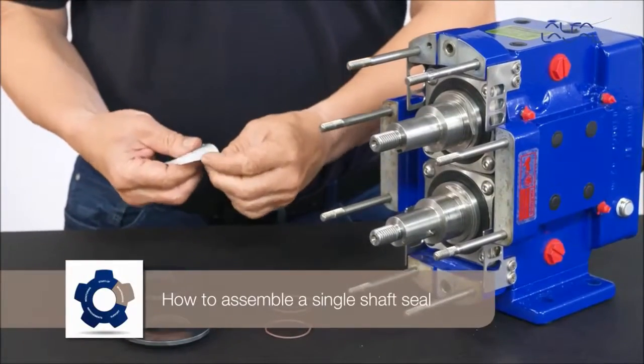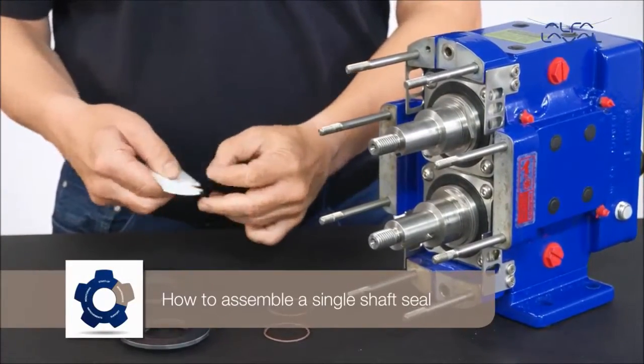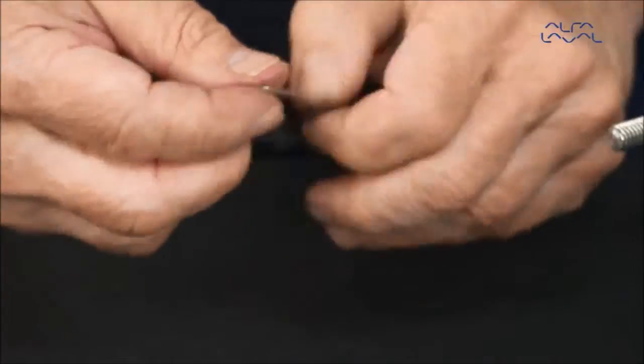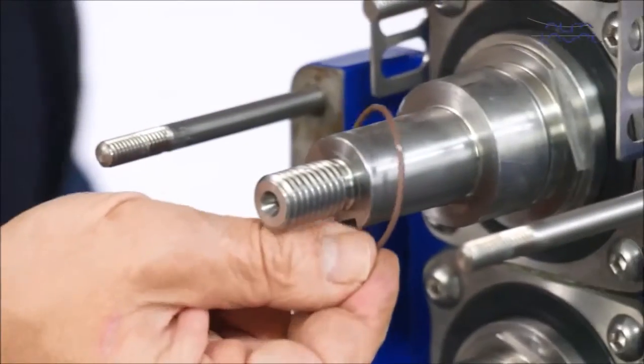How to Assemble a Single Shaft Seal. Lightly lubricate the shaft O-rings with a compatible lubricant and fit them onto the groove over the shaft.